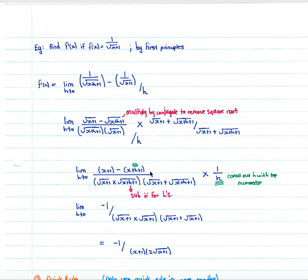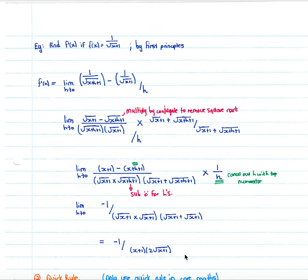Once you've multiplied through, you get a cancellation: x minus x, one minus one, leaving an h which cancels with the h in the denominator. We then cancel through as in the last example. In the next step we substitute zero for h. We get negative one over our denominator, which simplifies to √(x+1) times √(x+1), giving the derivative of f(x) = 1/√(x+1). Remember, before substituting zero for h you must always get a cancellation of h in the numerator with h in the denominator.